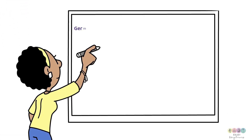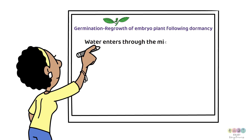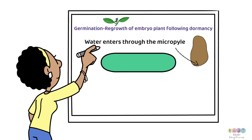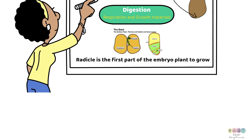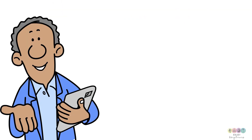Germination often features in many exam questions. It is the regrowth of the embryo plant following dormancy, and it is all kicked off when water enters the seed through the micropyle — remember, you must be able to identify that. Digestion always takes place in germinating seeds, and the products of digestion are used in respiration and for growth materials. It is usually the radicle that is the first part of the embryo plant to grow and be visible.